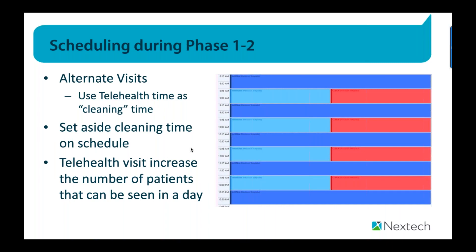During phase one and two of rollout, we're slowing things down while trying to recoup revenue. One thing you want to do is identify in your schedule where cleaning would be — the red area in the template marks when cleaning happens between visits. One practice got creative: while staff are turning over the room and cleaning, the physician can be doing a telehealth visit, with the patient coordinator as chaperone while the MA turns the room over. Get creative and think about where telehealth fits into expanding your schedule.